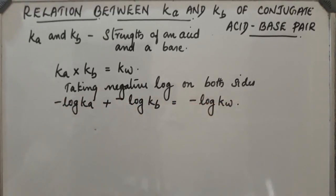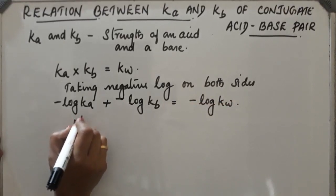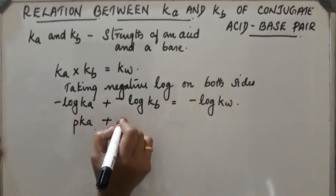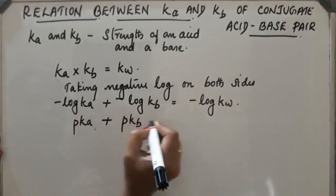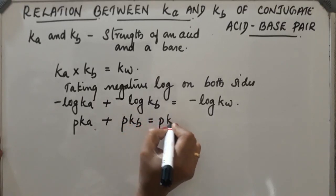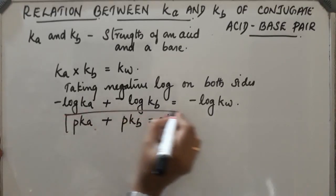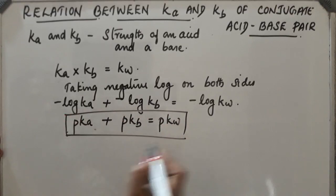What is this? -log Ka is pKa plus pKb will be equal to pKw. This is another relation used to do some problems.